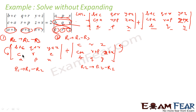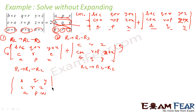So what we get: here R1 = R1 minus R2 gives b plus c minus c is b, q plus r minus r is q, y plus z minus z is y. Other rows are unchanged: c, r, z and a, p, x. Similarly for the second determinant, the first row is unchanged. R2 = R2 minus R1 gives: c plus a minus c is a, r plus p minus r is p, z plus x minus z is x. And the last row is also unchanged: b, q, y.